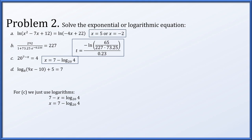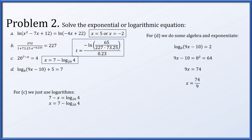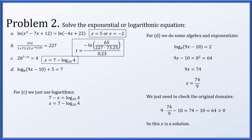For part d, subtracting 5 from both sides gives log base 8 of (9x minus 10) equals 2. Converting to exponential form: 9x minus 10 equals 8 squared equals 64. Adding 10 and dividing by 9 gives x equals 74/9. Checking: 9 times 74/9 minus 10 equals 64, which is positive, so there is no domain issue and x equals 74/9 is a valid solution.